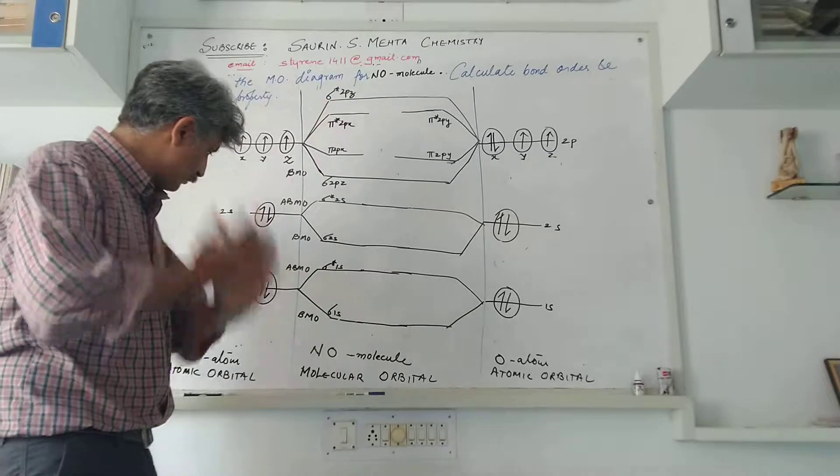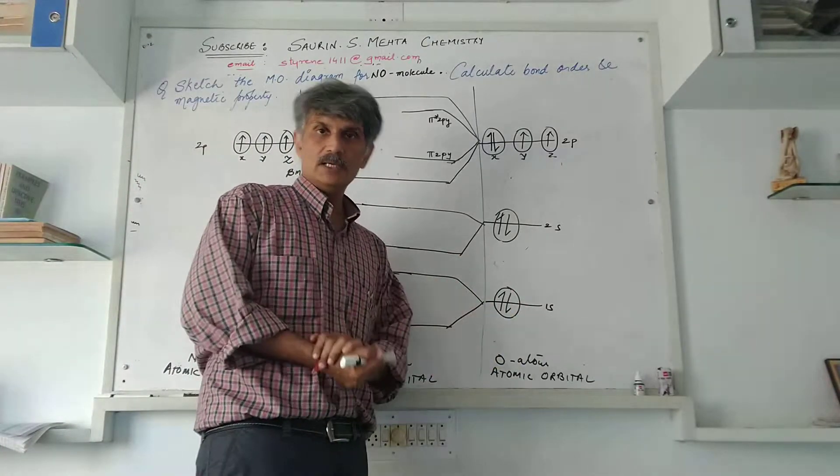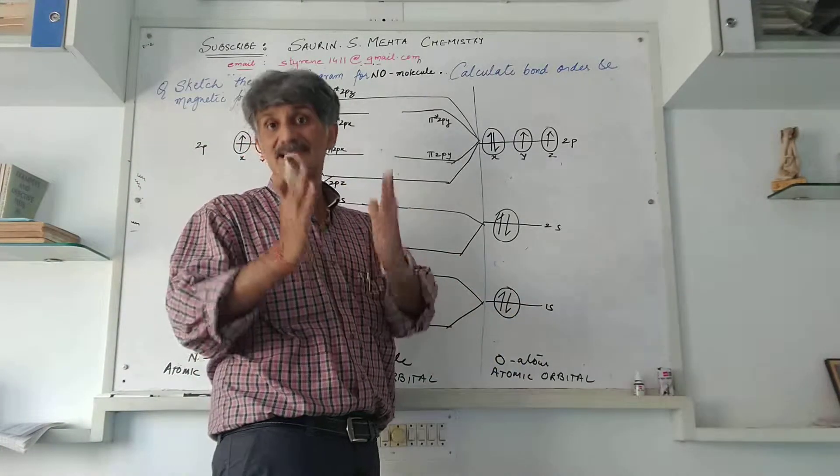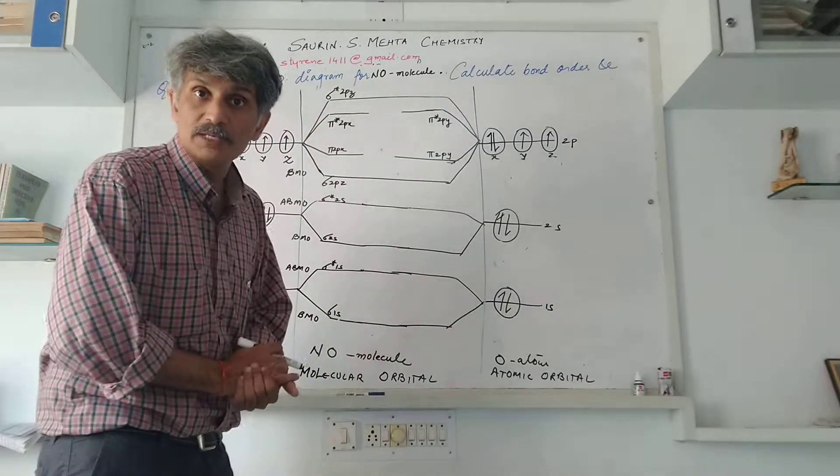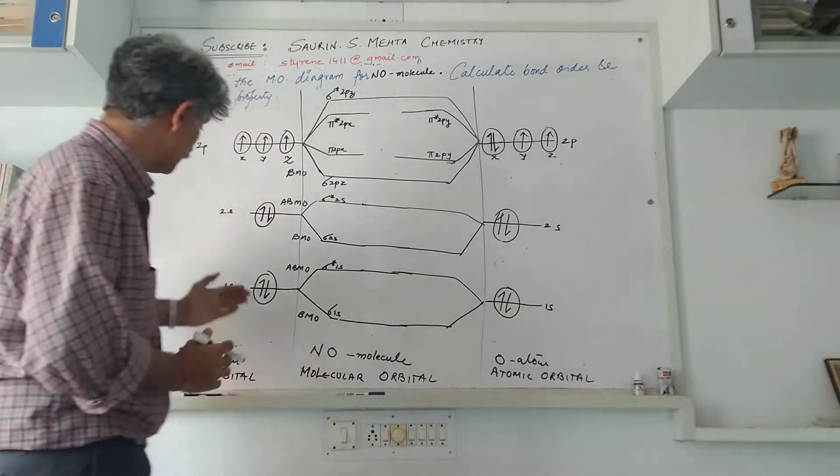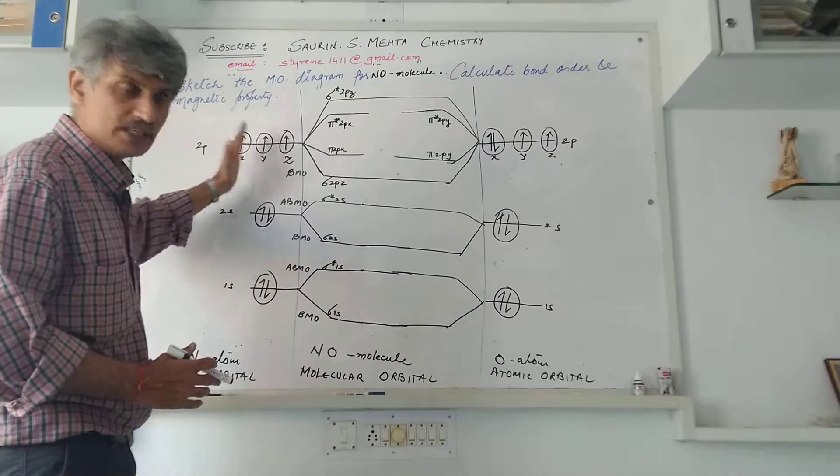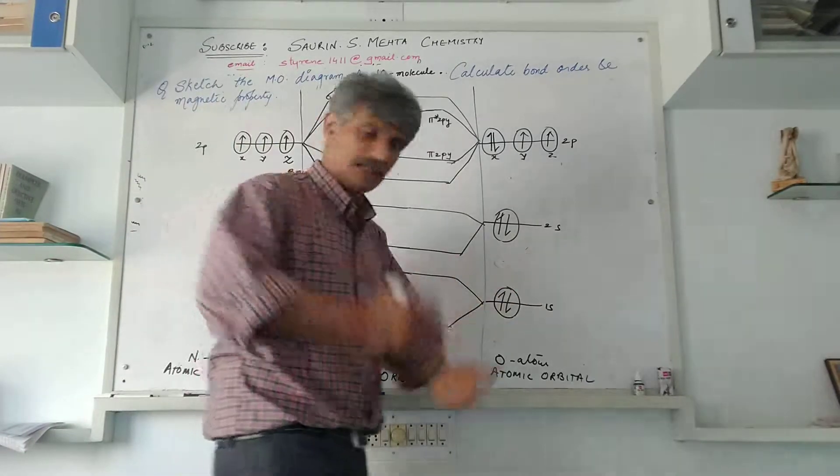For that we'll require nitrogen atom and oxygen atom. Nitrogen atom has got seven as its atomic number, so seven electrons we have filled in 1s, 2s, 2px, 2py, 2pz, one each. For oxygen, eight electrons are already filled up.